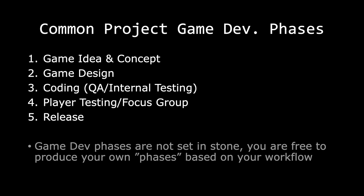Let's recap the common project game development phases. First, you create your game idea and concept. Then you create your game design. Third, you start coding. Fourth, you do your player testing and focus group testing. And lastly, you release.